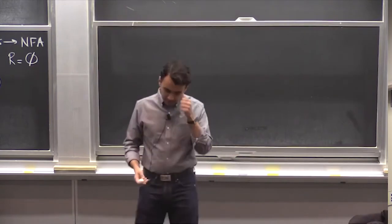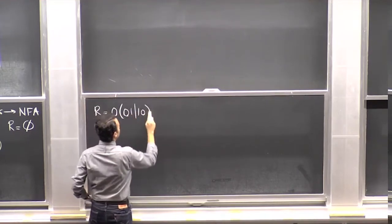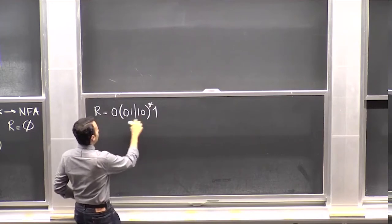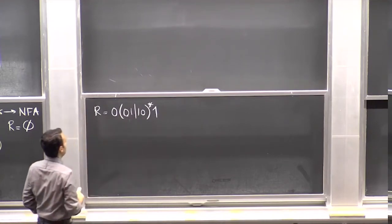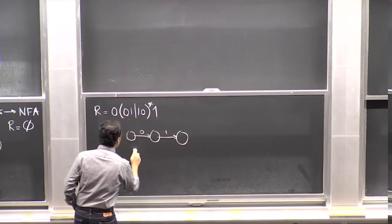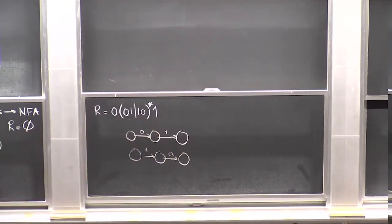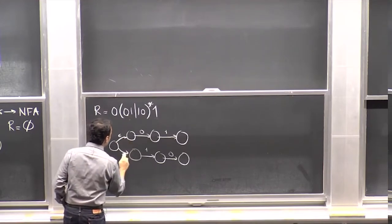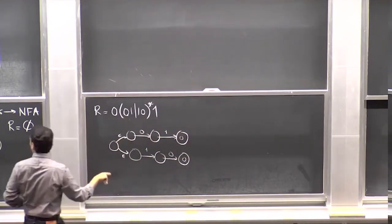Let's see a quick example. Say you have the regular expression zero concatenated with (0,1 or 1,0) star, concatenated with one. You break this into smaller steps. First, create a machine for 0,1 or 1,0 star. Start with the inside: make machines for 0,1 and 1,0. Then use the union rule — add a new start state with epsilon transitions to both. These remain accept states, so this accepts 0,1 or 1,0. Then apply the star operation by adding epsilon transitions back to the start state and adding a new accepting start state.